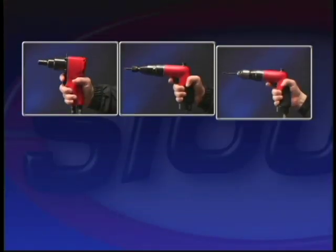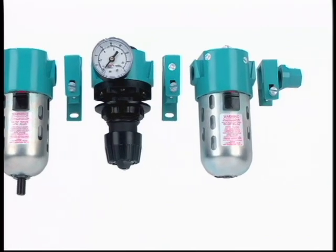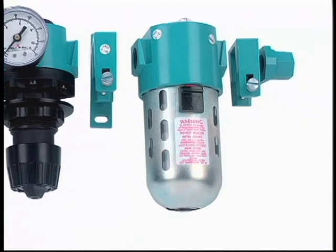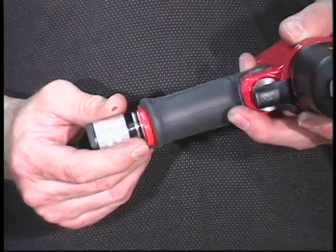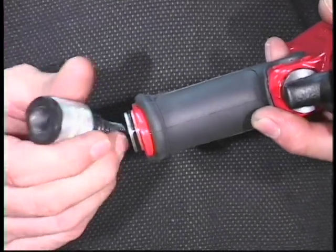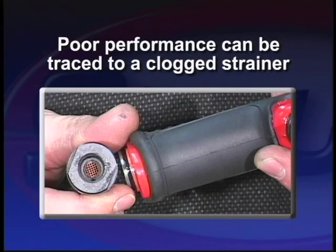Because of weight and space limitations, most pneumatic tools don't contain built-in lubricators. Air line lubricators are recommended with all air tools unless otherwise specified. Most tools are supplied with strainers to eliminate obstructions from entering the tool. A large number of tools reporting poor performance can be traced to a clogged strainer.